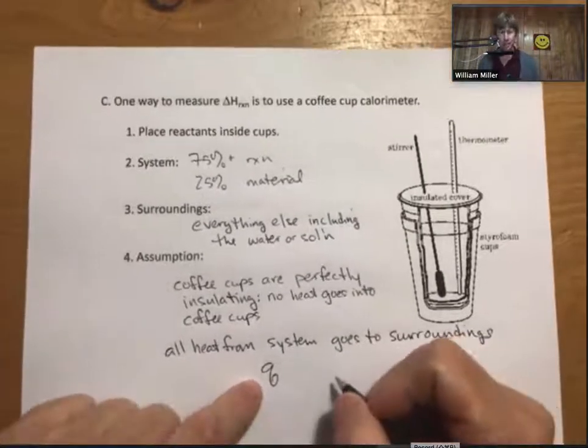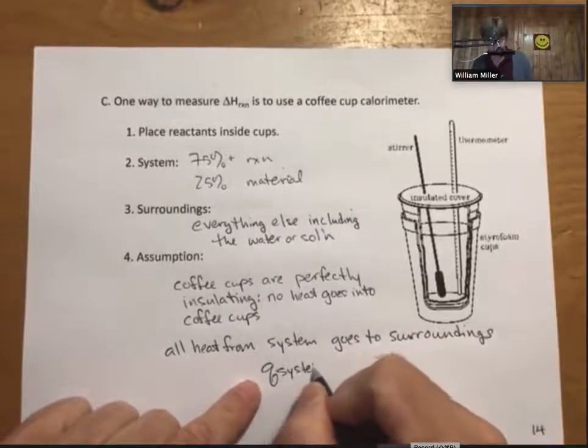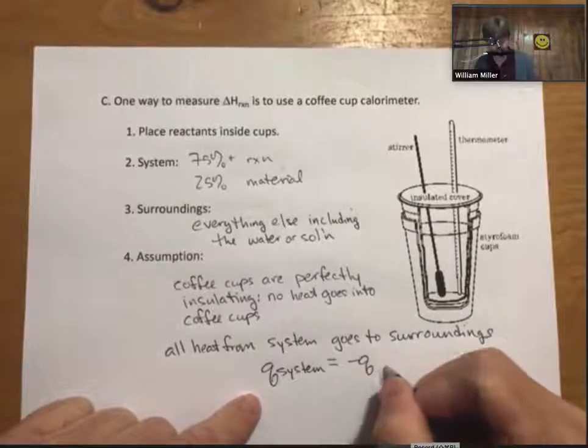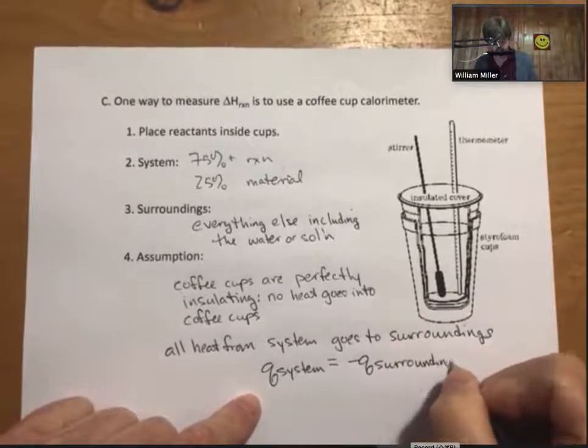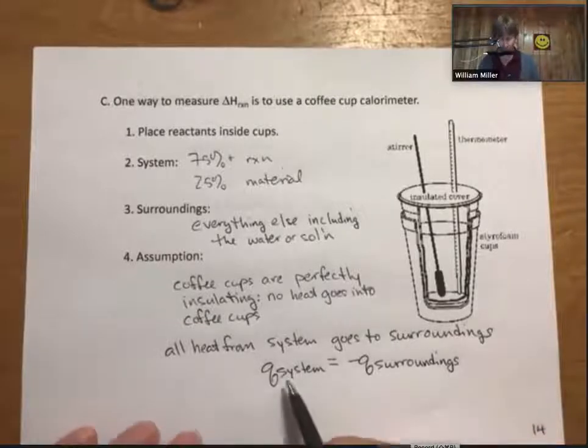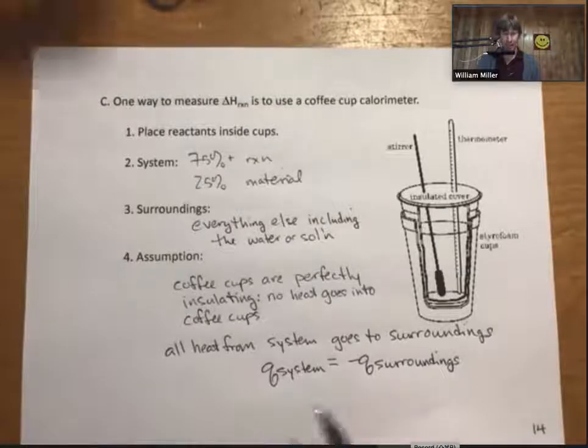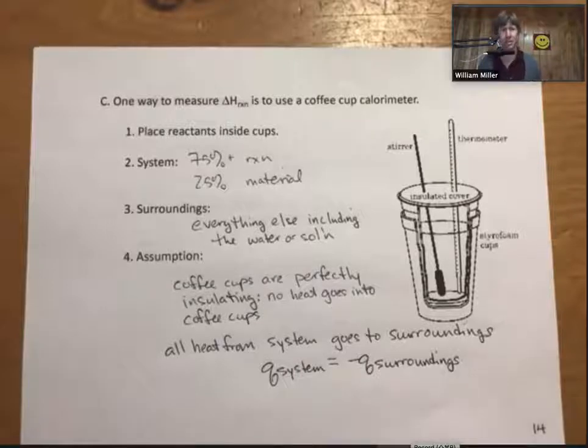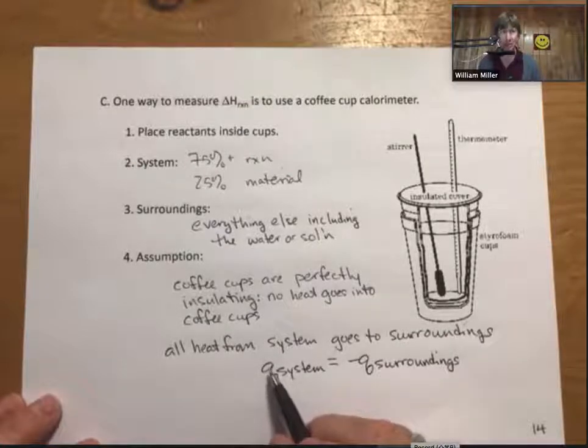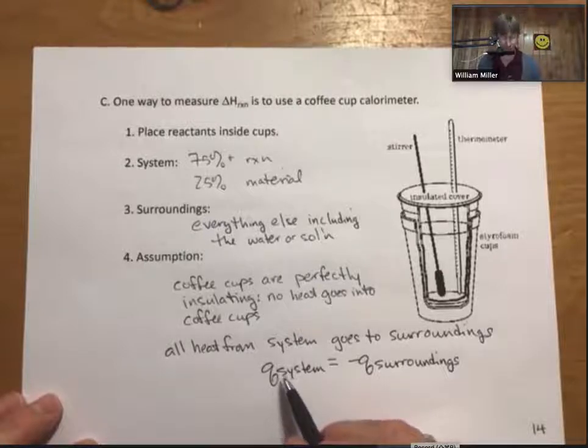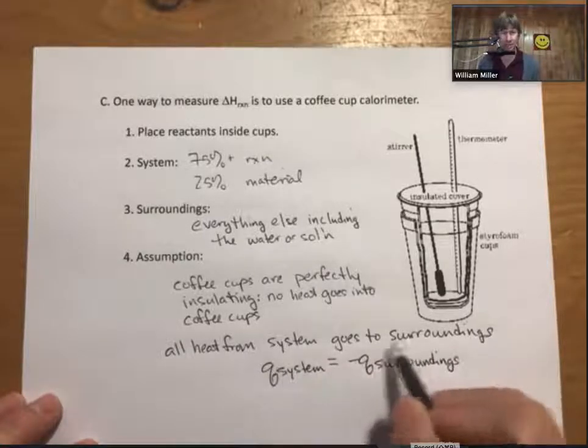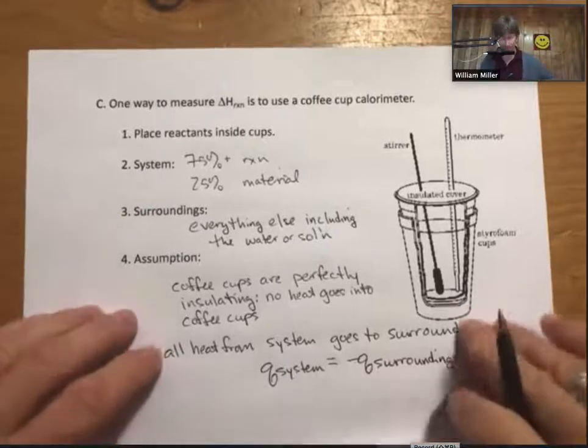We have an equation that does that. Q, lowercase q, is our symbol for heat. So q for the system equals minus q surroundings. And the minus sign only shows up because there's a change in the direction of heat flow. If the system is giving off heat, then the surroundings is taking heat in. There's a directional difference there, and that's what the minus sign means. The q system could be positive or negative. It doesn't matter. It depends on if the reaction is endothermic or exothermic. All it says is, if this gives off energy, this takes it in. If the reaction system takes in energy, then the surroundings are giving off energy.